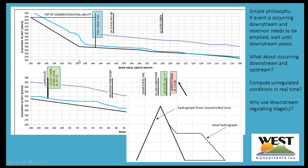There are a couple of problems with operating this way strictly. Number one, it can be somewhat complicated to make that determination, and probably more importantly, it's then up to the real-time reservoir operator to determine how much benefit they want to provide for each individual event. It's better to have the stakeholders come to an agreement about what level of protection they want and then perform the analysis to show what those trade-offs would be.